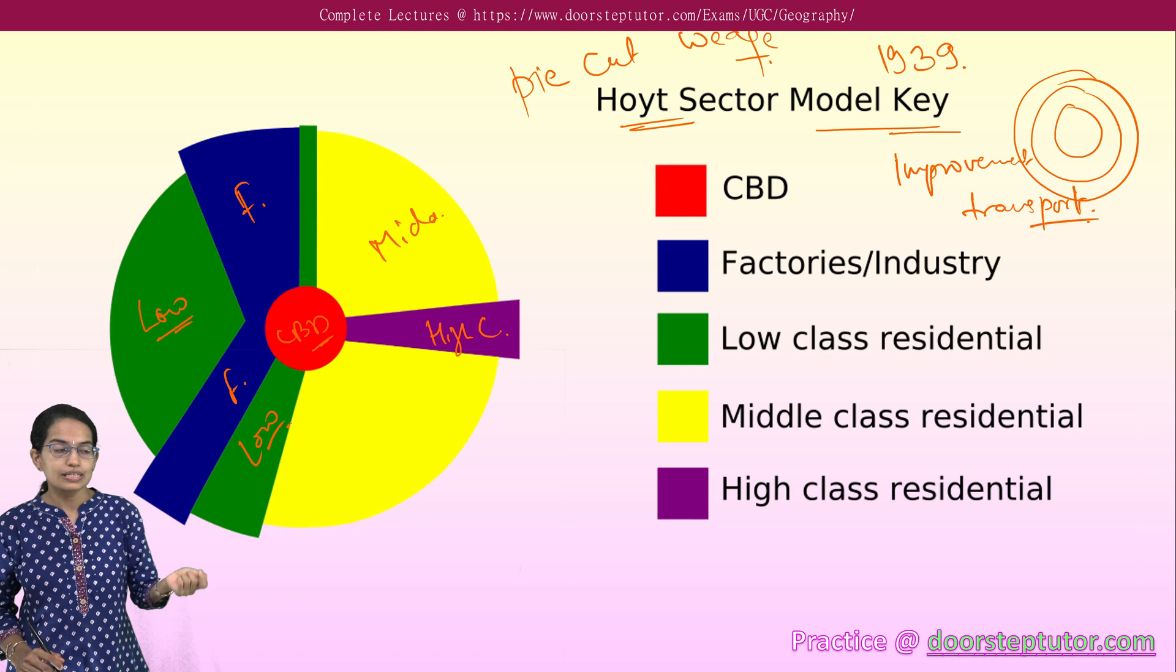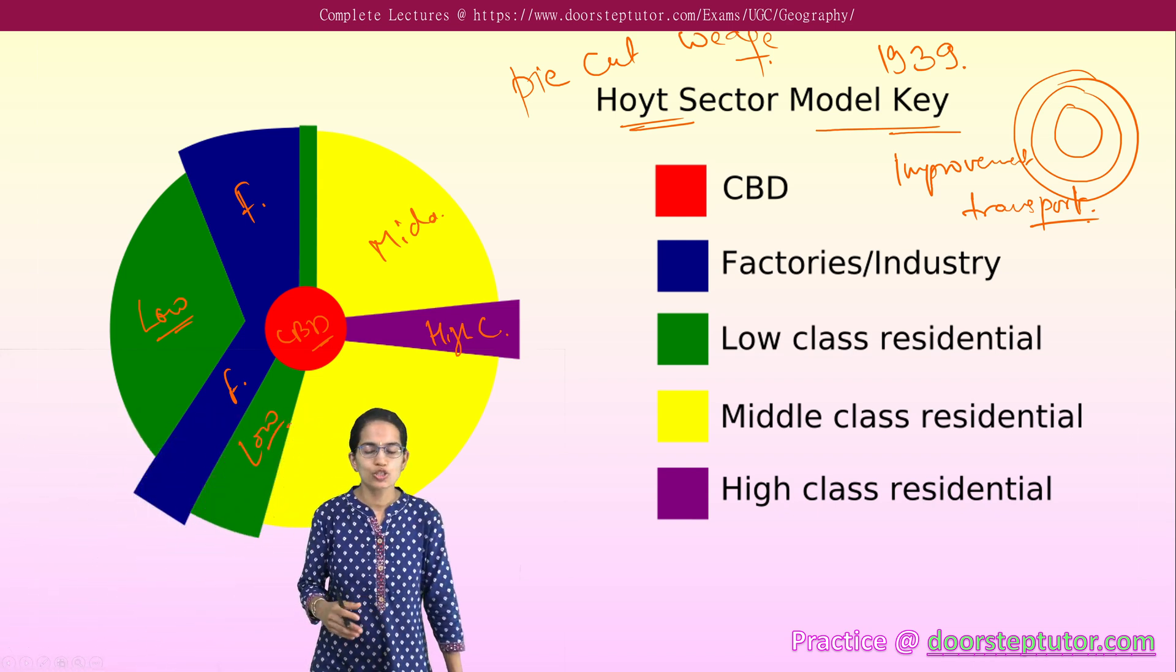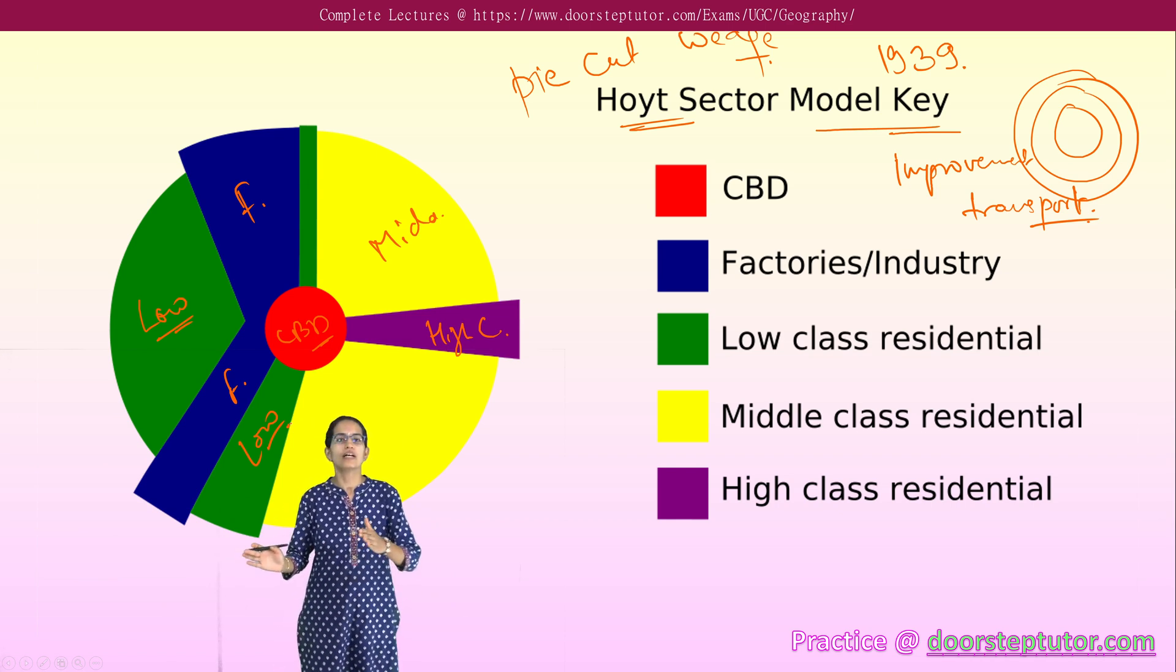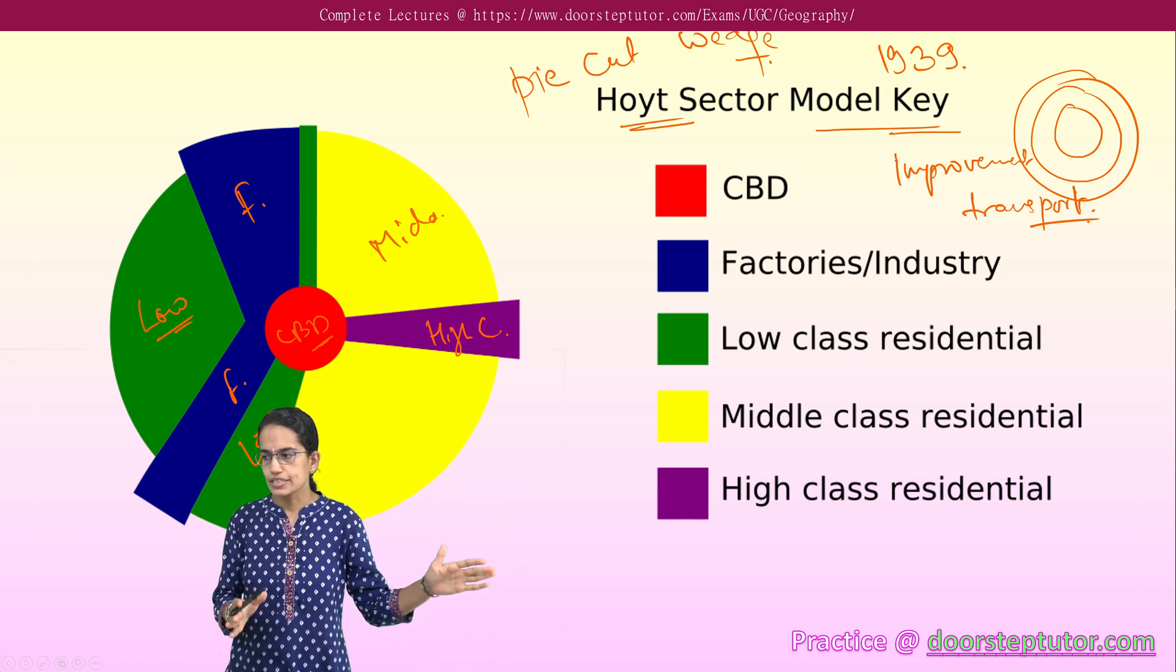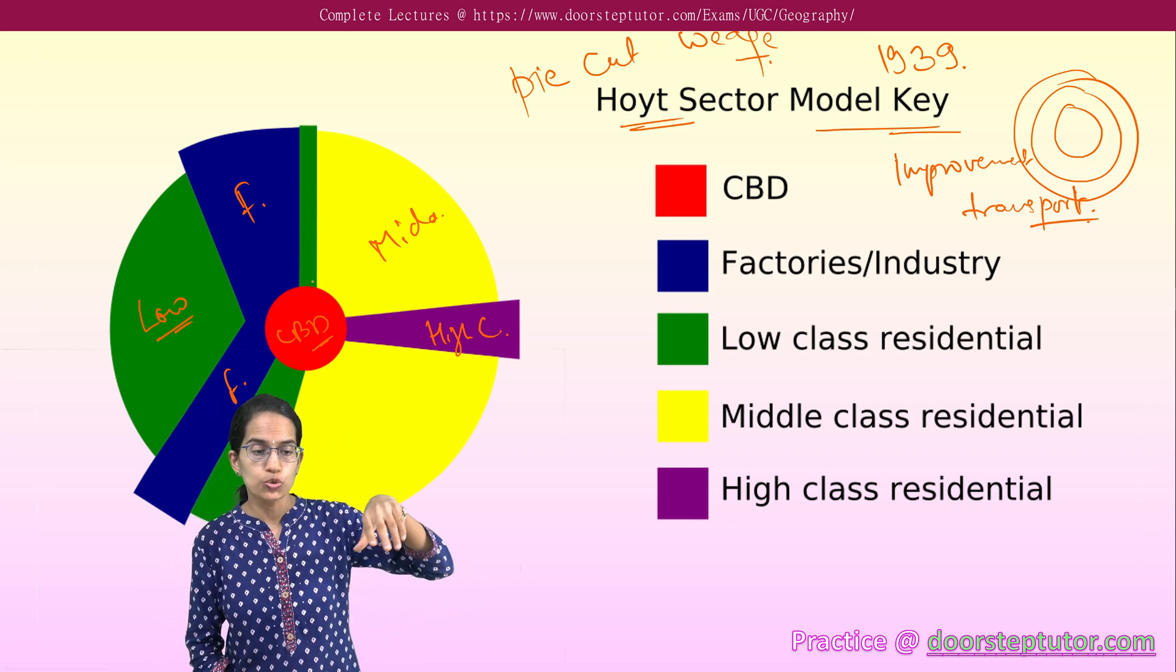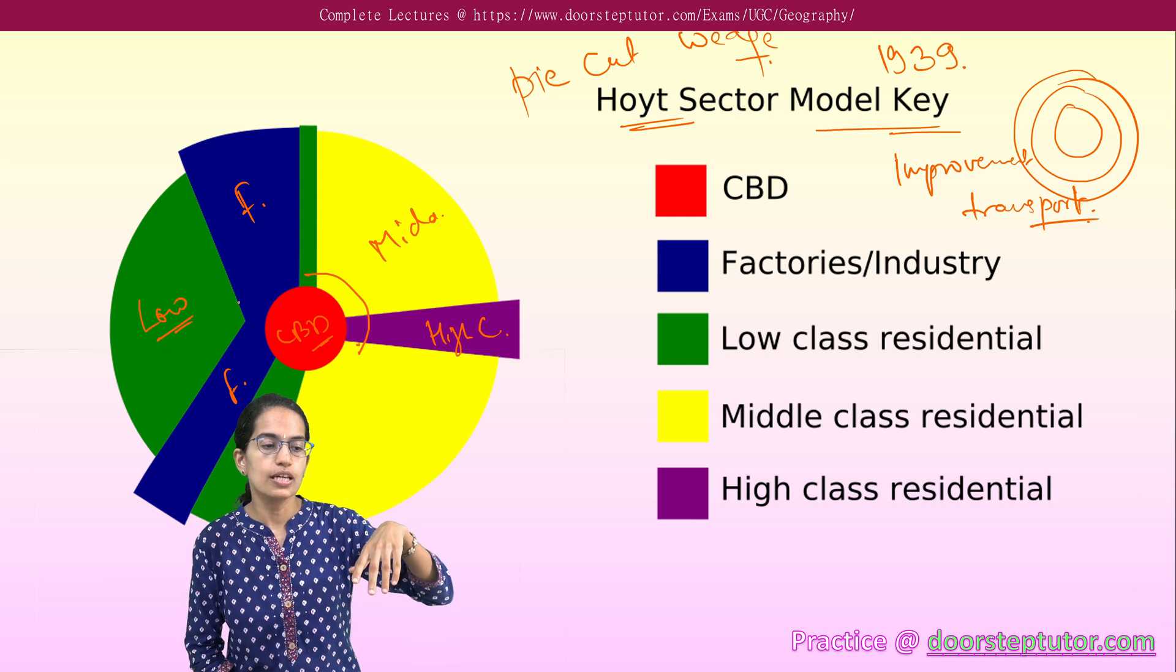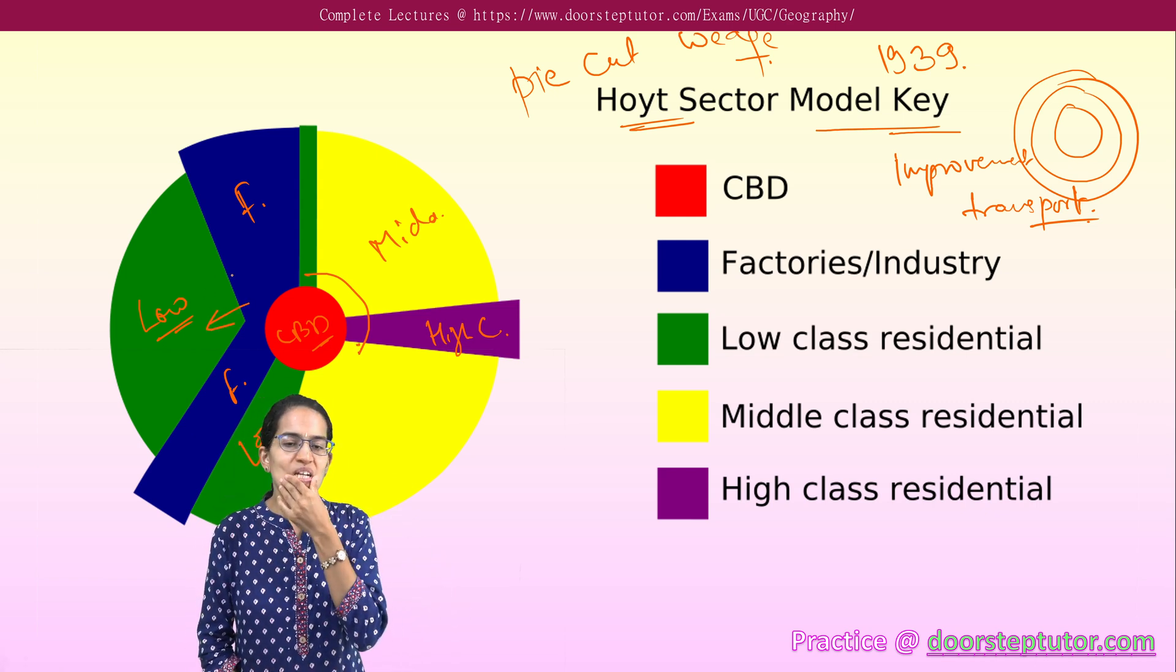Hoyt said that with the improvement in the transport system, electric trolley came in and these trolleys could take the people to a far off distance. Therefore, electric trolley extended the low income population which usually was near to the CBD far from the CBD or the central business district.